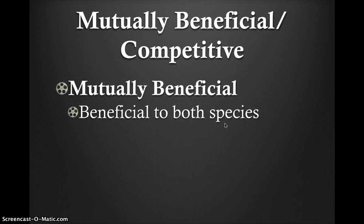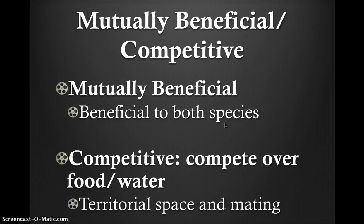Relationships between organisms can be mutually beneficial to both species — for example, a relationship between flowers and insects. Or they can be parasitic, benefiting only one party; examples include ticks, fleas, mosquitoes, mistletoe plants, and fungi. Competitive relationships are when plant and animal species compete over food, water, territory, and mating. No two species can occupy the same food or space successfully in a stable community, so closely related species live far from one another. The outcome of this competition determines the character of an ecosystem.